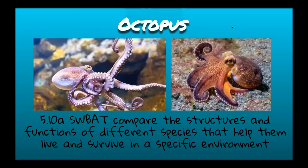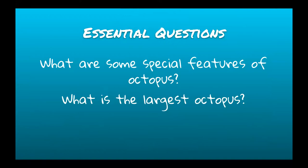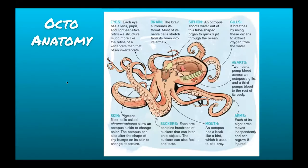At the end of my part of the field trip, you will be able to compare the structures and functions of different species that help them live and survive in a specific environment. Our essential questions are: what are some special features of the octopus, and what is the largest octopus? First, let's talk about some of their structures.